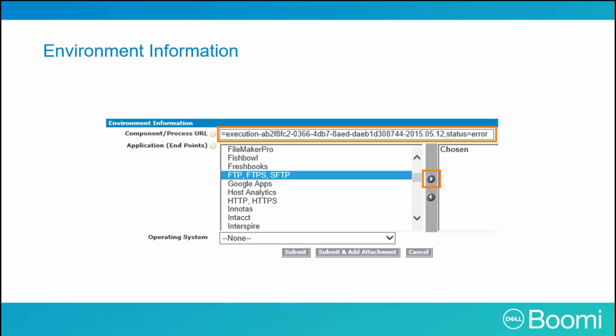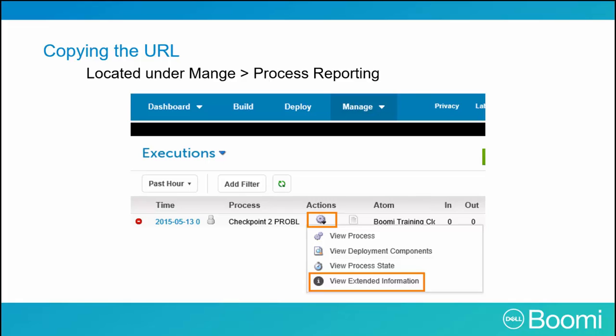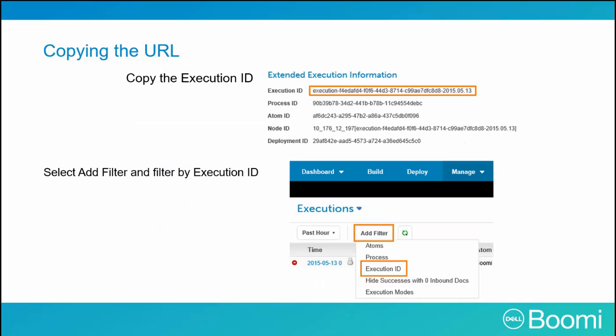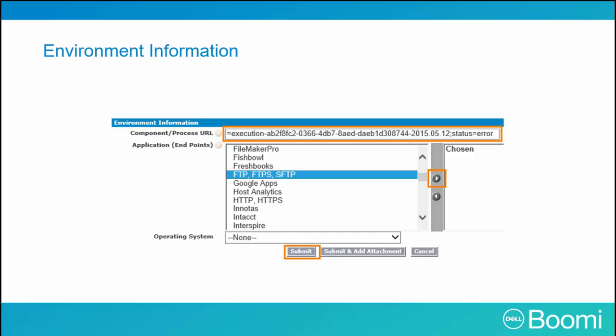The support case's final section is the environment information. Include the component and process URL to allow the support team to view the component or process experiencing the error. To copy the process URL, navigate to the process reporting page under Manage > Process Reporting, find the process with the error, select the gear icon under Actions, and click 'View Extended Information.' Copy the extended ID from the first line, then add a filter by process ID. Paste the URL into the process component URL field and select the application endpoints, listing any connection types and data sources. The support case is then complete — click Submit.